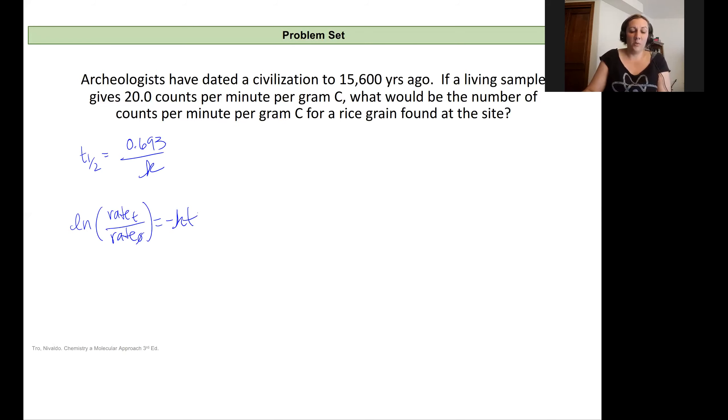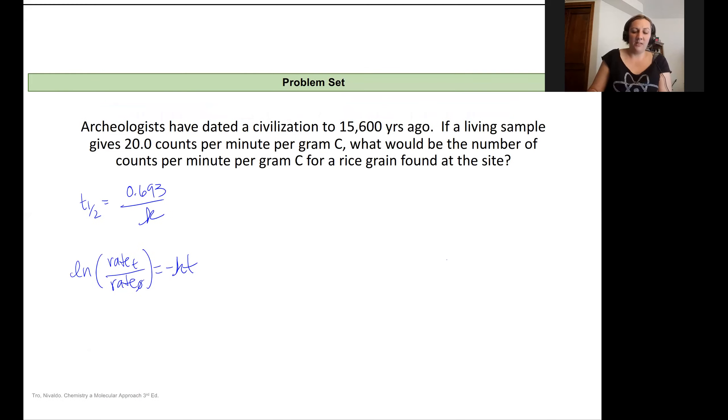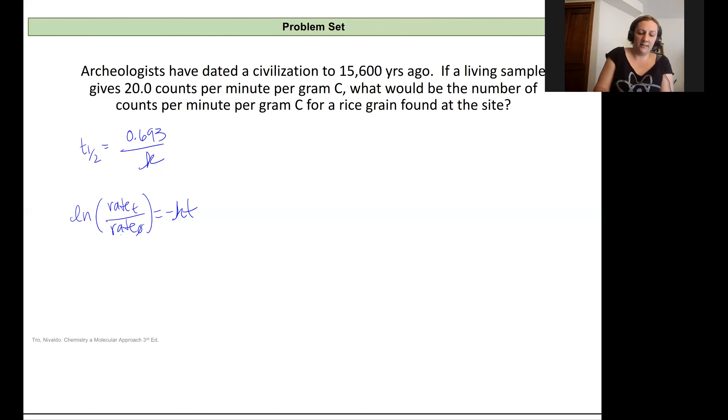So that 20 counts per minute is for a living sample. So that's this rate zero, 20.0 counts per minute. And we are looking for what to expect for counts per minute. So we're going to solve for this rate right here. And we know that our time is going to be 15,600 years.